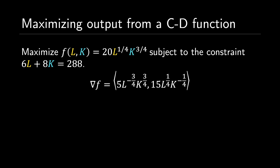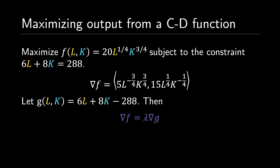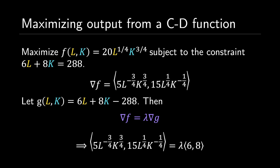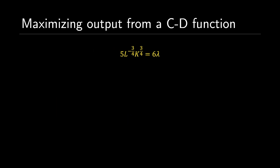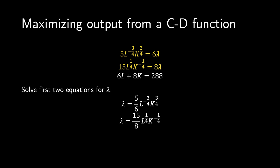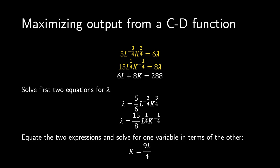We first find the gradient of f, which is del f equals the vector: 5 times L to the negative three-fourths times K to the three-fourths, comma 15 times L to the one-fourth times K to the negative one-fourth. We let our constraint equation be G of L comma K equals 6L plus 8K minus 288, so the gradient of G is del G equals the vector 6, 8. We now have the equation del f equals lambda times del G. Then we produce three equations — two containing lambda and one being our original constraint. We solve the first two for lambda and set them equal to each other, resulting in K equals 9L over 4.